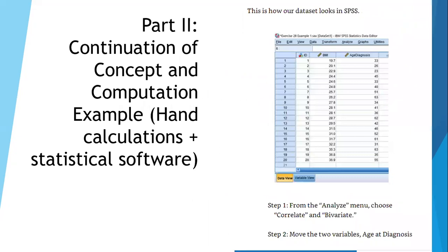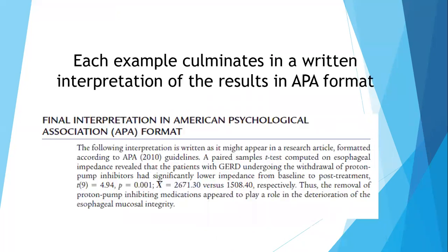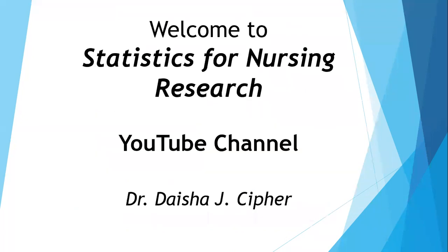Part two of the book consists of exercises that teach you how to compute the statistic by hand and then use a statistical software package called SPSS to check your work. Part two also contains exercises that teach you how to perform power analyses using the six most common effect sizes, in addition to providing examples of how to write written interpretations of the results in APA format.